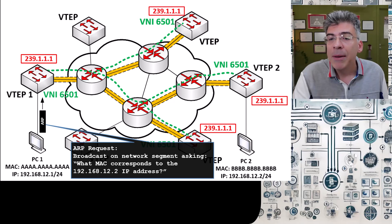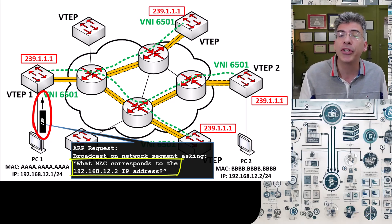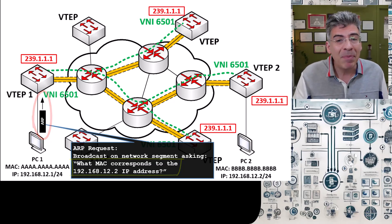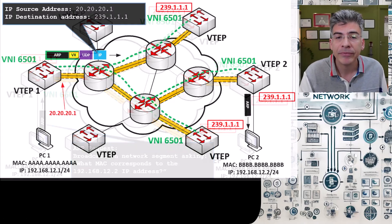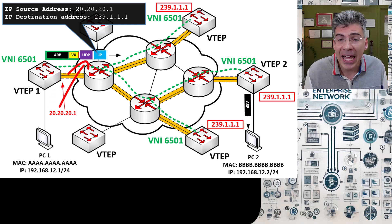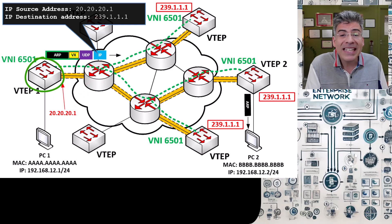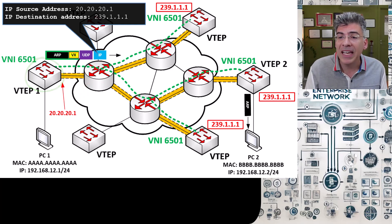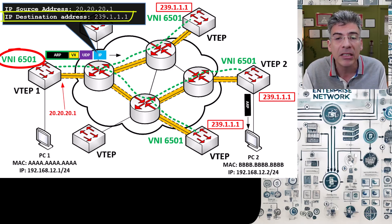Initially, before any other transmissions take place, PC1 will send an ARP request to find the MAC address of PC2, based on the destination IP address of 192.168.12.2. The PCs themselves are oblivious to the VXLAN topology, so they just behave as they would on any network segment. That ARP request will reach VTEP1. When VTEP1 encapsulates the ARP request, it adds the VXLAN header containing the VNI, a UDP header with appropriate port numbers, and an IP header for routing on the underlay network. Since this VTEP is configured with a multicast underlay and knows that VNI-6501 is associated with 239.1.1.1, it puts that multicast IP address in the destination IP address field of the IP header.